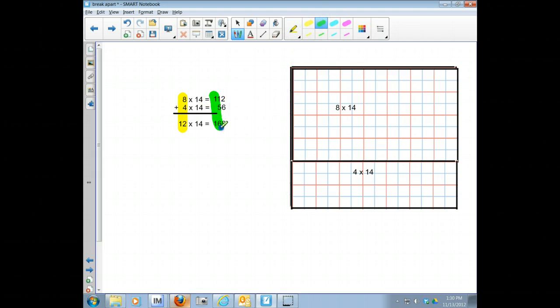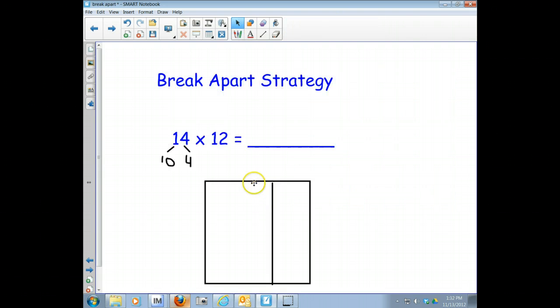So now we're going to break apart the 14 into 10 and 4, and we're going to multiply each part by 12. So I'm going to do my 10 here, this box is bigger. I'm going to put my 4 here. That's the 10 and the 4 from the 14, and I'm going to multiply each one by 12. So this graphic organizer is going to help me keep track of what I'm multiplying.